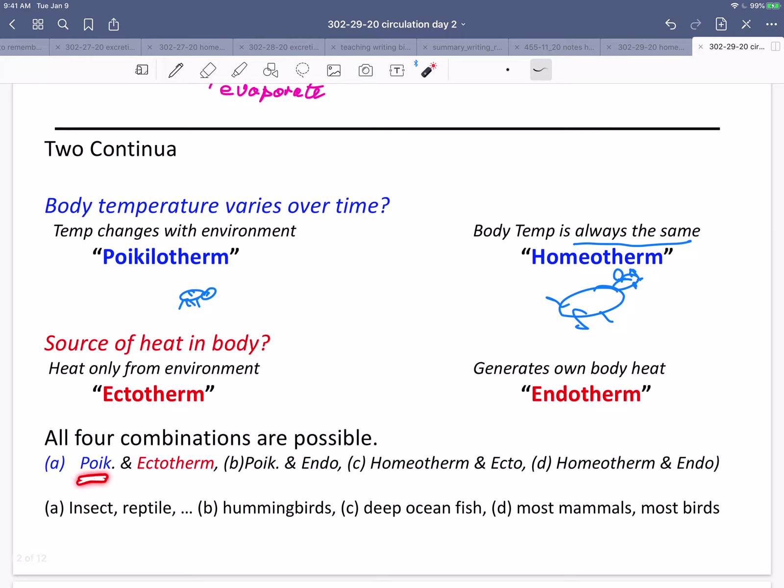And all four combinations are possible, although they're not equally common. Animals can be poikilotherms and ectotherms. That's insects, reptiles, lots of fish. So they're poikilotherms and ectotherms. Temperature changes with the environment, and they get heat only from the environment.